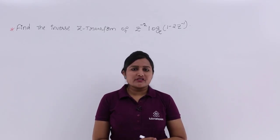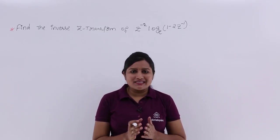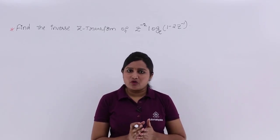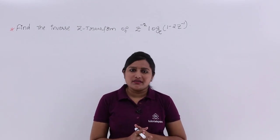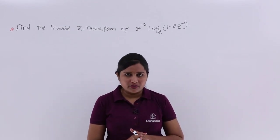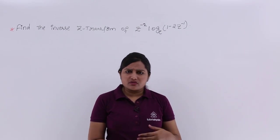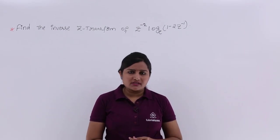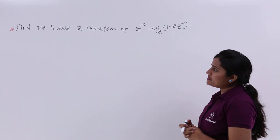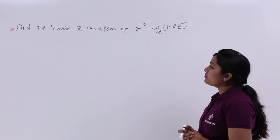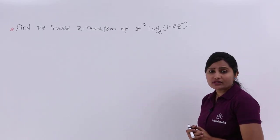In this video we are going to solve one of the previous CSIR scientific paper technical paper related problems, which is given in a previous year. Find the inverse Z-transform of Z^(-2) * log_e(1 - 2Z^(-1)).